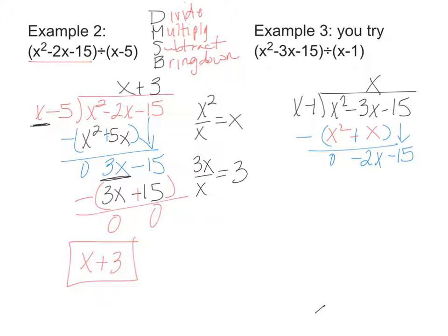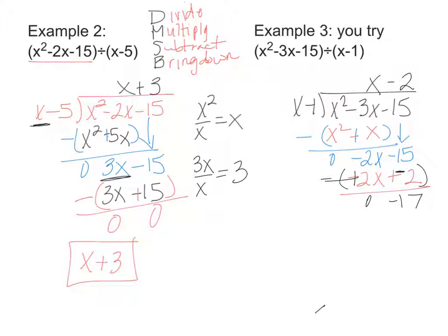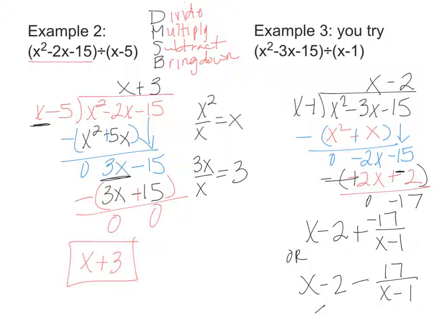My next division is negative 2X divided by X, which is negative 2. Negative 2 times X is negative 2X, and negative 2 times negative 1 is plus 2. Then I subtract: negative 2X minus negative 2X — the 2X's cancel — and negative 15 minus 2 gives me negative 17, which is my remainder. So we write the remainder as a fraction: X minus 2 is the whole part, plus negative 17 over X minus 1, or equivalently X minus 2 minus 17 over X minus 1.